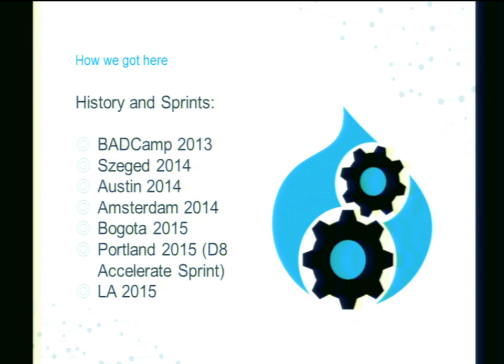That was absolutely fantastic. My goal — and it's a bit of a stretch goal — is to release an alpha version of the test runner by the end of the extended sprint at this conference. We're close. We've got one major outstanding piece, which is really just the publishing of the results after the test run runs. If we can get that, we'll be releasing an alpha here within the week, hopefully.